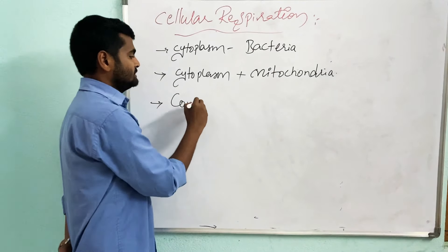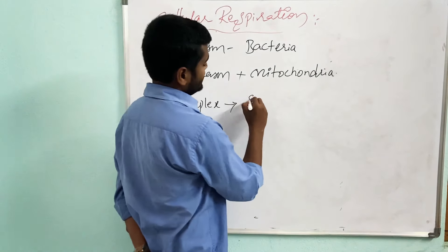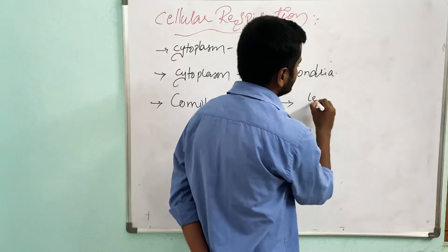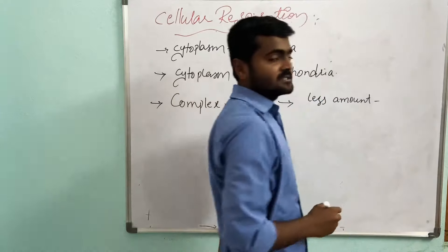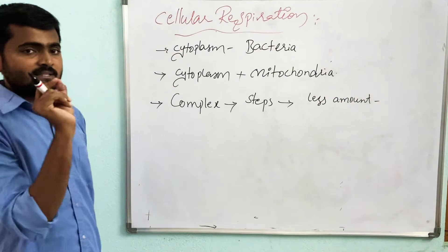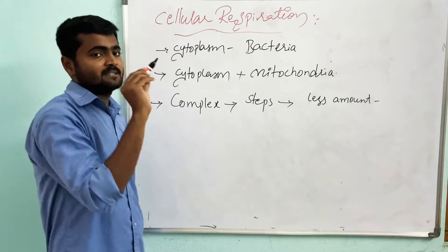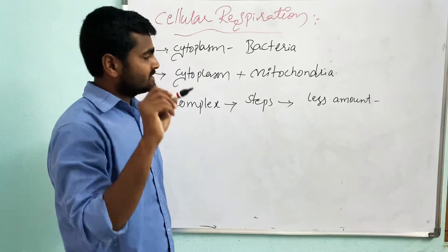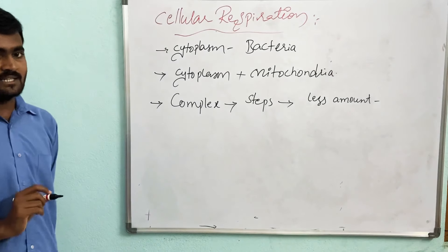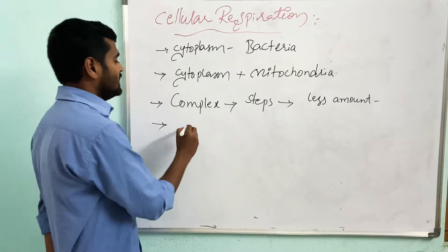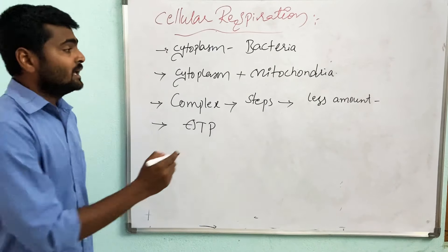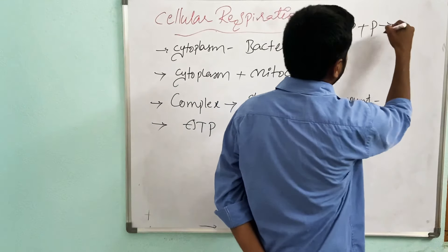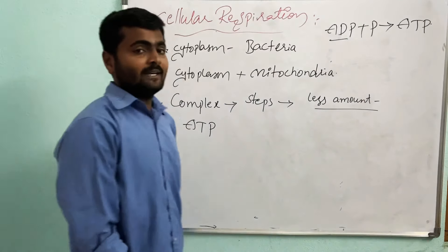The releasing of energy in cellular respiration is not a simple step or reaction — it is a very complex process requiring many steps. Energy is not released all at once; in each and every step, a very small amount of energy is released as complex materials are broken down into simple chemicals. Finally, this energy is stored in the form of a chemical component called ATP.